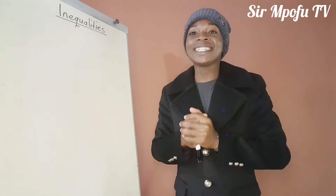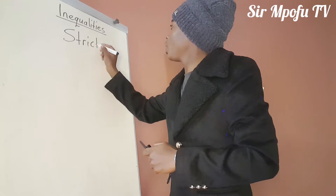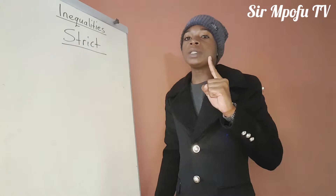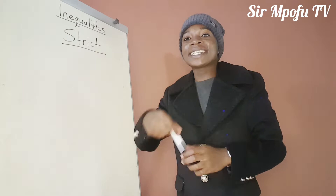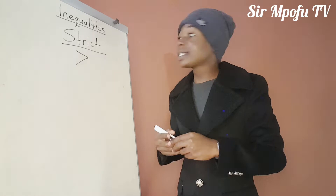Now, maybe you're having a question — what is a strict inequality? What is a not strict inequality? Let us start with strict inequality. What do we mean when we are saying a strict inequality? There is only one concept that I want you to take note of that will help you to identify a strict inequality: a strict inequality has no possibility of equality. For instance, if I say your mother is greater than you — this is the greater than sign — there is no possibility of equality.